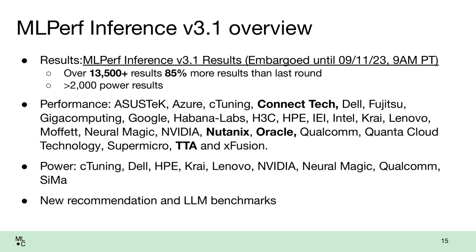We have our new recommendation and LLM benchmarks, and we're going to do a little deep dive on those. I'm especially proud that we got 15 submitters for our LLM benchmark — GPT-J — and nine submitters for our new recommender. This is a huge amount of participation for a new benchmark, and I think it really reflects the interest in these areas.